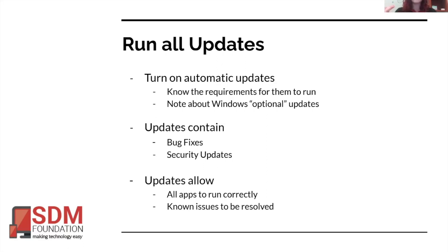There are ways to do automatic updates. We can check in our device if updates are running automatically or whether we have to check them periodically. Specifically for Windows machines, sometimes they have optional updates, and you want to be running those too. At SDM, if someone comes in and an app or device is not behaving as expected, one of the first places we check is whether all system updates have run. Let's get it up to date, restart the machine, and see if we're still seeing unexpected behavior.